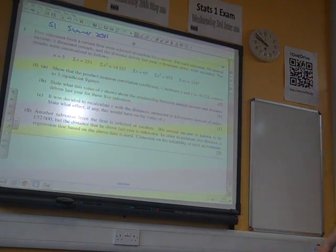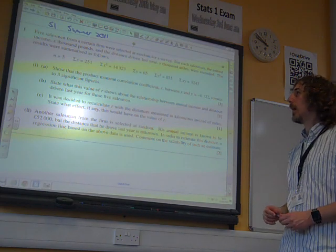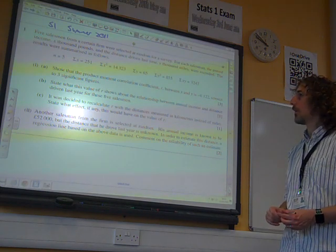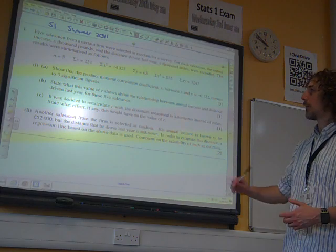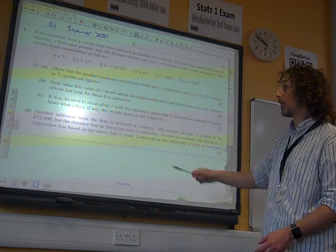Five salesmen are from a certain firm with a certain random for a survey. For each salesman, the annual income and the distance driven is recorded. The results are summarized as follows. It's great when they give us these key bits of data, isn't it? Because that's a good start.